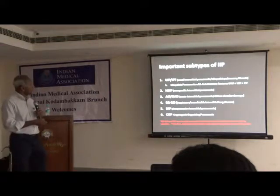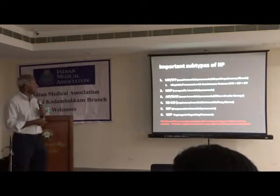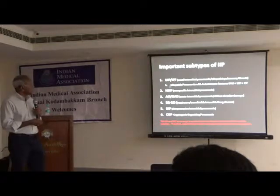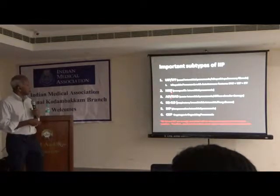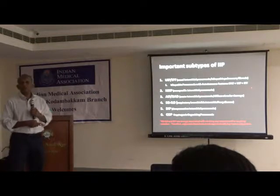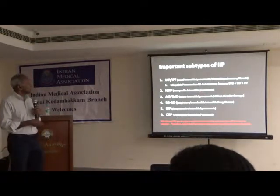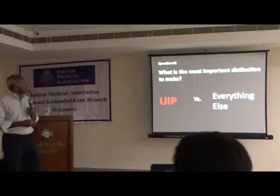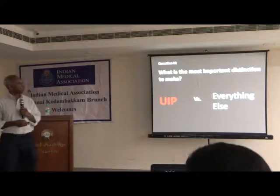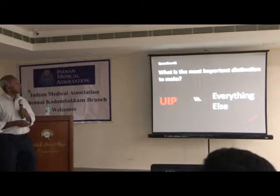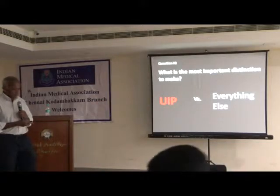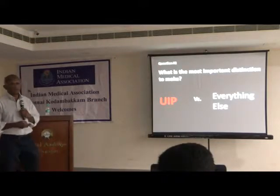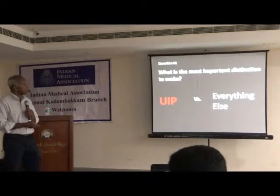UIP-IPF is potentially the most lethal of these diseases, with the worst prognosis. The others, even though they have distinct characteristics, can be broadly grouped together because they behave somewhat similarly and also respond to treatment similarly, except perhaps for AIP. The most important distinction to make is: does the patient have UIP, or is it one of the other diseases? That distinction will help us to prognosticate and also decide what treatment we should give.